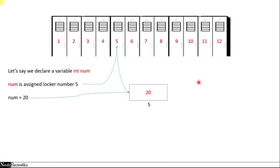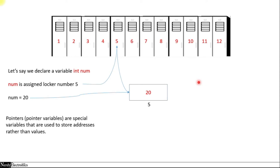Pointers are nothing but a kind of variables that store the addresses of other variables. So if we define a pointer and tell it to store the address of num, instead of storing 20, it will store 5 — the address of this variable.